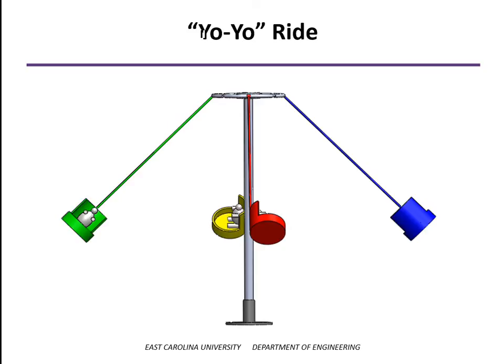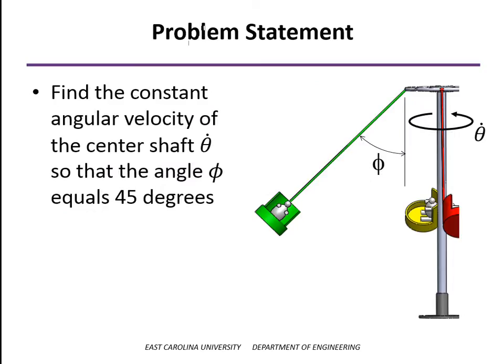A central shaft spins around and causes the seats, which are connected either by rods or by cables, to angle outward as we show here. And so what we want to find out is how fast do we need to turn that center shaft so that the seat comes out and holds a constant angle at 45 degrees.